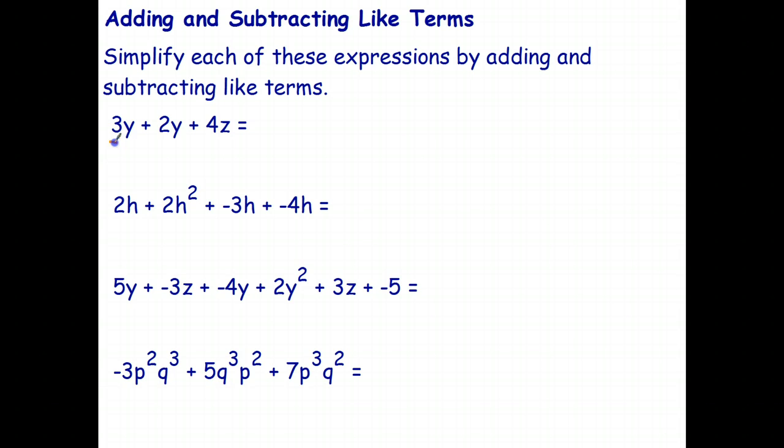So I've got the right color. 3y plus 2y is 5y and 4z is not a like term, so we just write that by itself. So there's the first one done.